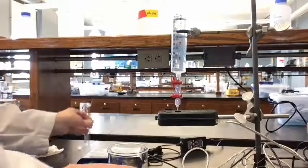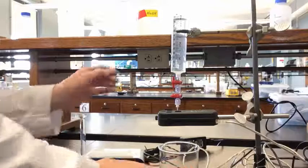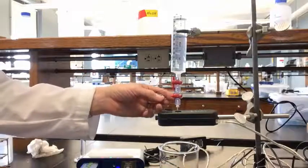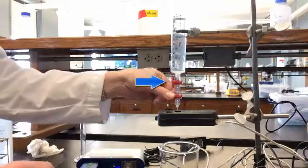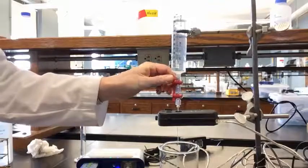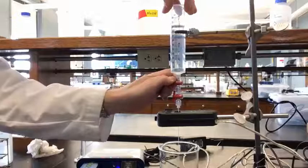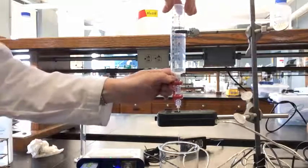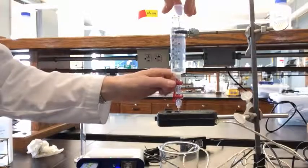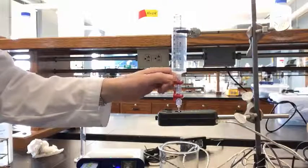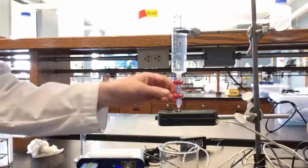There are two stop cocks on the drop counter. The top stop cock controls the drop rate and the bottom stop cock is only for turning the syringe on and off. Open the bottom stop cock all the way and then use the top stop cock to change the drop rate until it is about 1 to 2 drops per second.